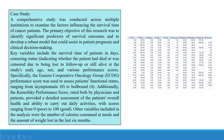Specifically, the Eastern Cooperative Oncological Group (ECOG) performance score was used to assess the patient's functional status, ranging from 0 to 4, where 0 stands for asymptomatic and 4 for bed-bound. The dataset also includes ph.karno and pat.karno — the Karnofsky performance scores rated by both physicians and patients, providing a detailed assessment of the patient's overall health and ability to carry out daily activities, with scores ranging from 0 (poor) to 100 (good). Other variables included calories consumed at meals and weight lost in the last six months.